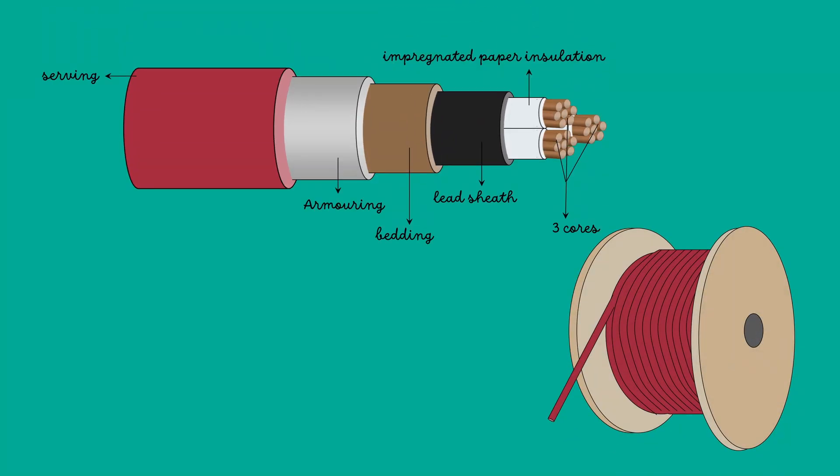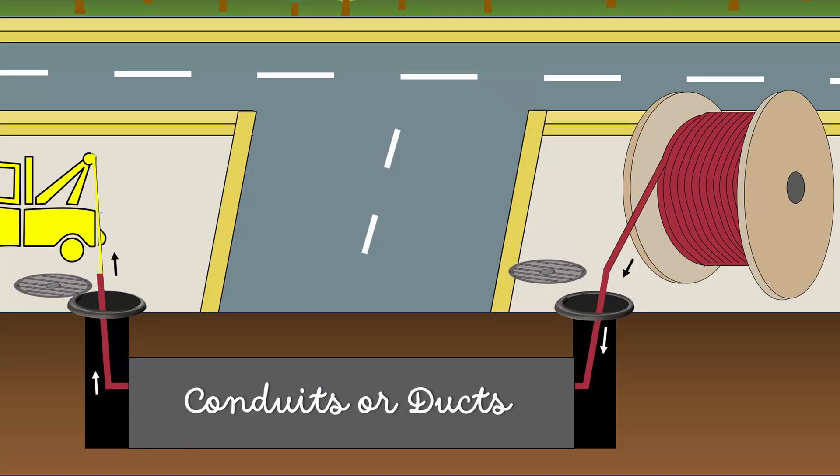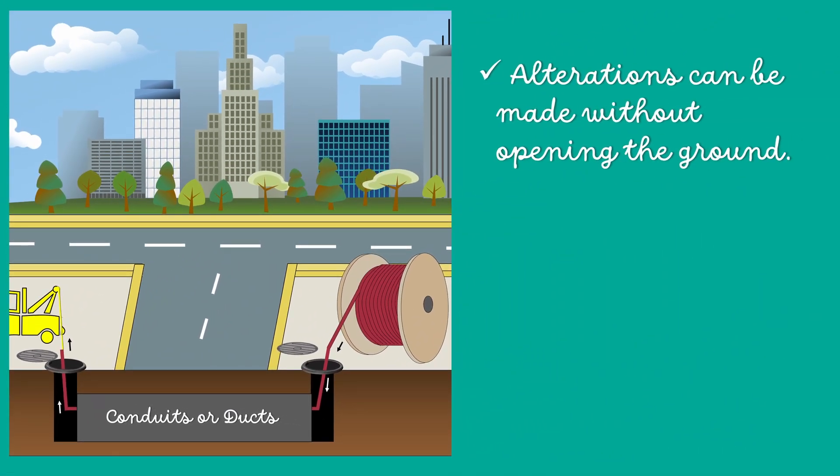The cables to be laid in this way need not be armored but must be provided with a serving in order to protect them when being pulled into the ducts. Once the conduits have been laid, alterations can be made without opening the ground. There are very less chance of fault occurrence due to the strong mechanical protection provided by the system.